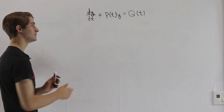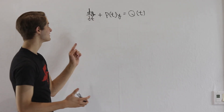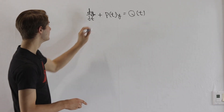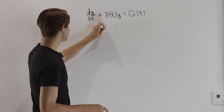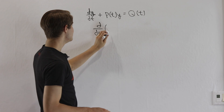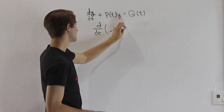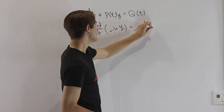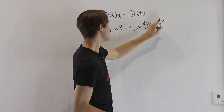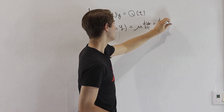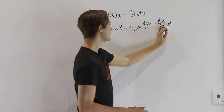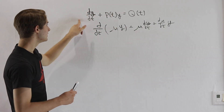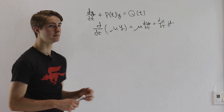If you look at this equation, specifically at the left side, you might notice that it sort of looks like the product rule, which says that if we take the derivative with respect to t of some function mu times y, that's going to get us mu times dy/dt plus dμ/dt times y.